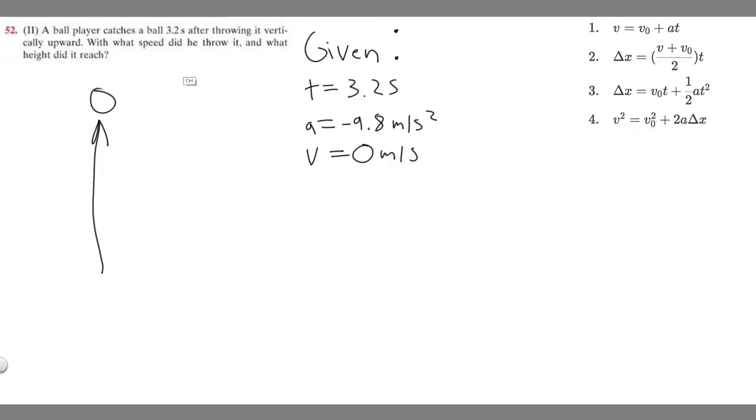So you're going to set that equal. And then we're trying to find what speed did he throw it. So that basically just means find the initial velocity. So V sub 0, we're trying to find.